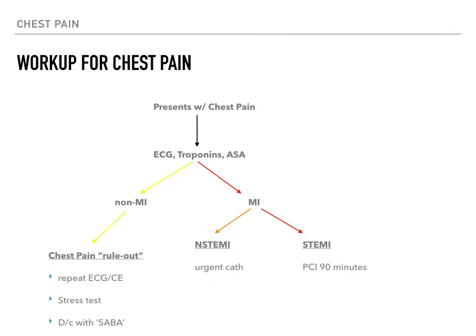If the ECG shows no myocardial infarction but the patient is still having chest pain, it's very likely angina — non-MI, anginal chest pain. This is the classic chest pain rule. The patient came in with risk factors for coronary artery disease but isn't actively having an MI, so they get admitted to the internal medicine service. Over the next couple of days you repeat ECGs and cardiac enzymes, and the next morning they get a stress test — you increase their demand and see what happens. If the stress test shows compromised coronary vessels, they ultimately go to the cath lab or get stents.